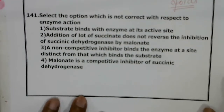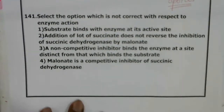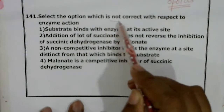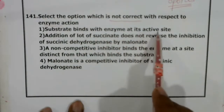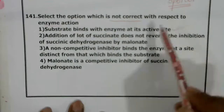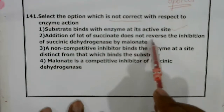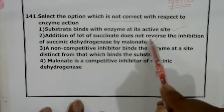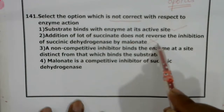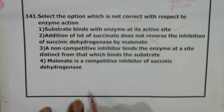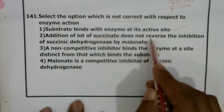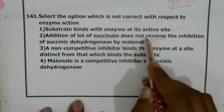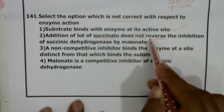Question 141: Select the option which is not correct with respect to enzyme action. 'Substrate will bind to enzyme at its active site' — this is correct. 'Addition of oxaloacetate does not reverse inhibition of succinate dehydrogenase' — this is incorrect. Malonate is an inhibitor of succinate dehydrogenase; when the amount of succinate is increased, the inhibition can actually be reversed. So stating that it will not reverse is incorrect.